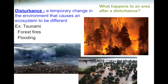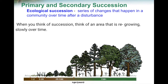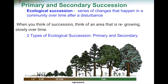What happens to the area after a disturbance? Does it stay the same or does it change? The answer is that changes occur after a disturbance, and that's called ecological succession — a series of changes or steps that happen to the area. It may take some time, or longer depending on how badly the area was changed. We're going to look at two types: primary succession and secondary succession. Ecological succession means the area is regrowing and changing over time.